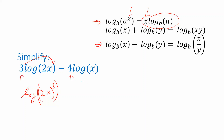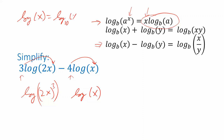Do the same thing on the right side — take this 4 and move it in, giving log of x to the fourth. Notice that we don't see a base written here. If we just write log of x, that's short for log base 10 of x — it's called the common logarithm. So there is a base; when it's log base 10, we can just leave out the 10.